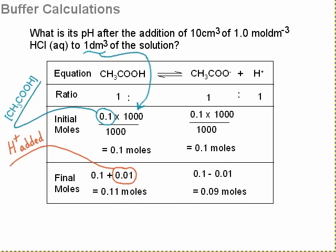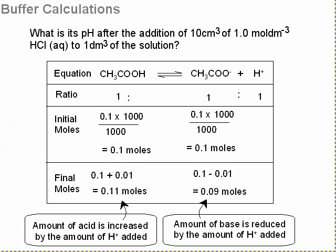After the H plus has been added, we get a little bit more of the weak acid formed by an amount of the H plus that was added, which was 0.01 from the previous slide. For the CH3COO-, that's gone down slightly because that's the one which has reacted and absorbed the H plus. So the amount of weak acid has been increased by the amount of H plus added, and the amount of base is reduced by the amount of H plus added. It's worth bearing in mind that a buffer works not just when you add H plus, but also if you added some OH minus.